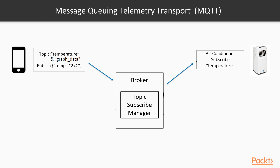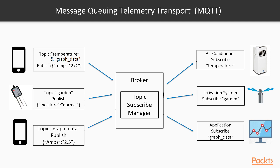The only drawback of this protocol is the central entity: if the broker dies, the entire communication will drop. There are many examples of MQTT in use, such as a moisture sensor measuring moisture level and publishing to the topic 'garden', based on which a water pump turns itself on if the moisture level is low.